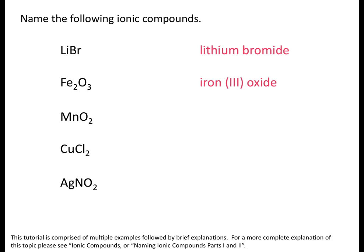Third example: manganese is also a transition metal, so we need to include a Roman numeral indicating the charge on the manganese ion. Oxygen forms ions with a charge of minus two, and we have two of them, so to offset that negative charge the manganese ion must have a charge of plus four. So we would name this compound manganese(IV) oxide.